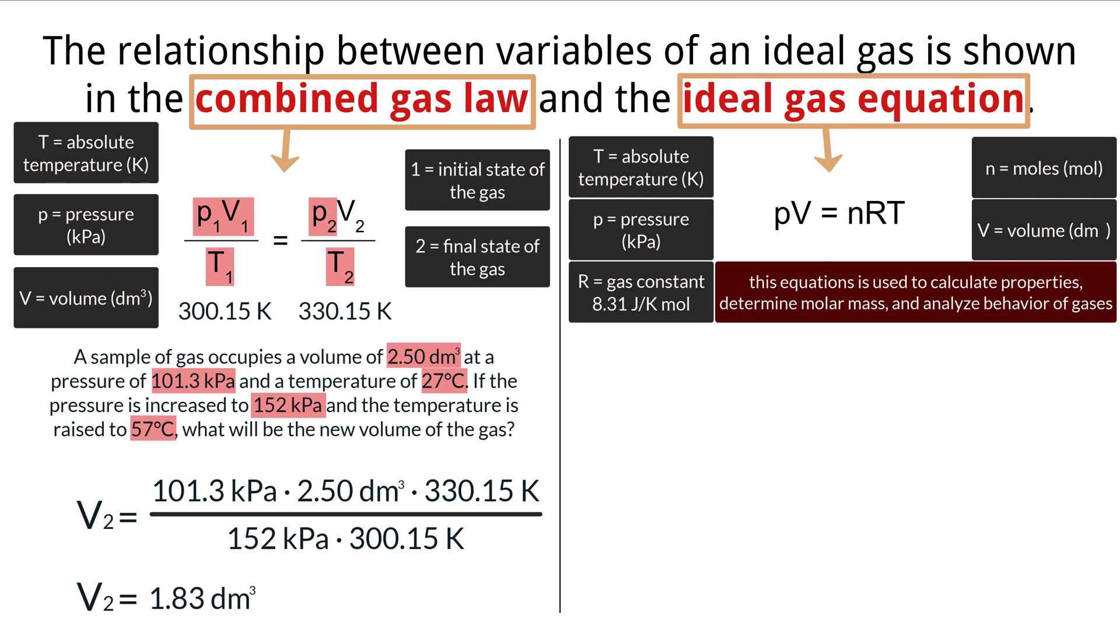Let's look at a sample problem. A 2.50 gram sample of an unknown gas occupies a volume of 1.50 cubic decimeters at a temperature of 27 degrees Celsius and a pressure of 101.3 kilopascals. Determine the molar mass of the unknown gas.